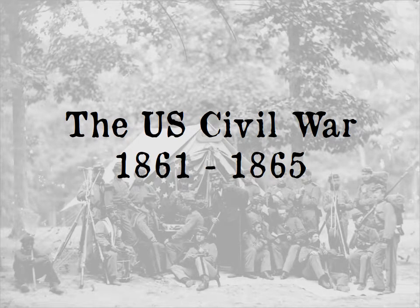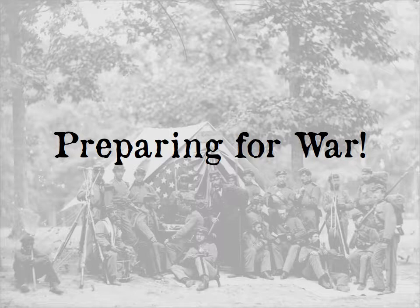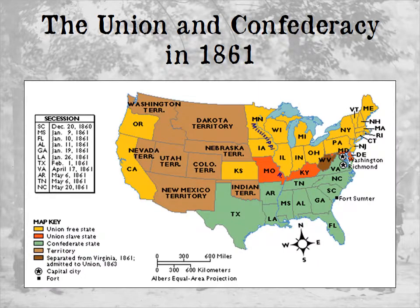Okay, so today all we're going to do is start going over the beginnings of the war. We're going to talk about day one of the war — what advantages each side had going into the war. Before we do that, we're going to talk about the status of the war after secession. If you look at this map, this was the situation by mid-1861.